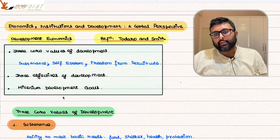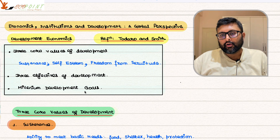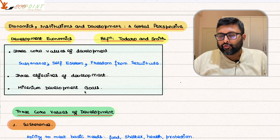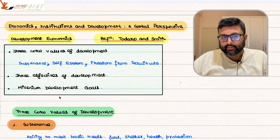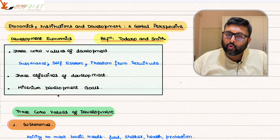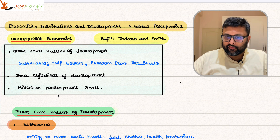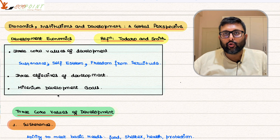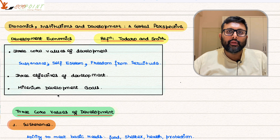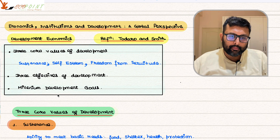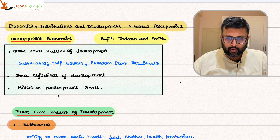Let us take the discussion further of chapter one of Todaro and Smith. We'll talk about three things today: what are the three core values of development, what are the three objectives of development, and what are the Millennium Development Goals?